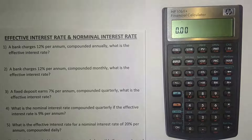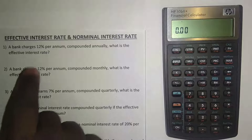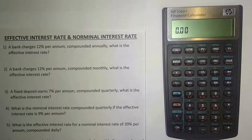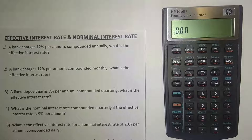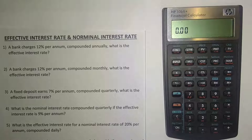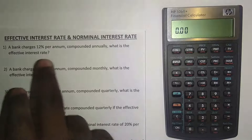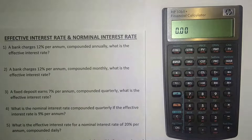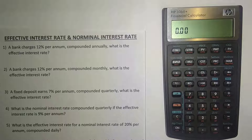The first example says: a bank charges 12% per annum compounded annually — what is the effective interest rate? One thing we know is that the effective interest rate will always be higher than your nominal interest rate. Also, if it's compounded annually, your effective interest rate will always be the same as your nominal interest rate.